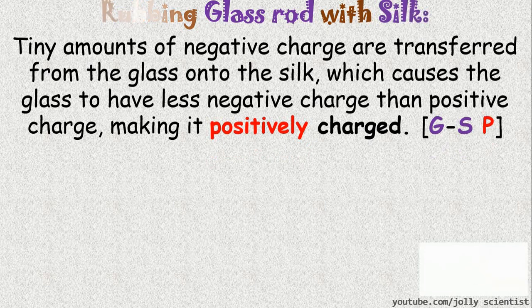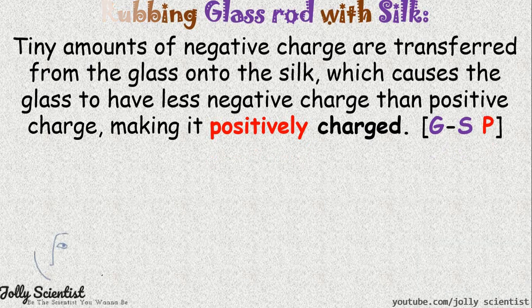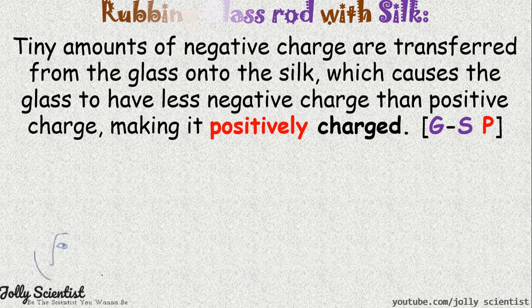In summary, rubbing a glass rod with silk brings about a tiny amount of negative charge being transferred from the glass onto the silk, which causes the glass to have less negative charge than positive charge, hence making it positively charged. So we say GSP, which is glass rod with silk gives positive.